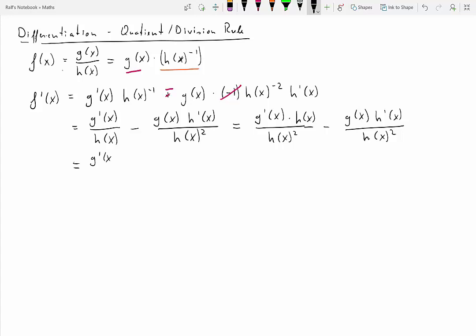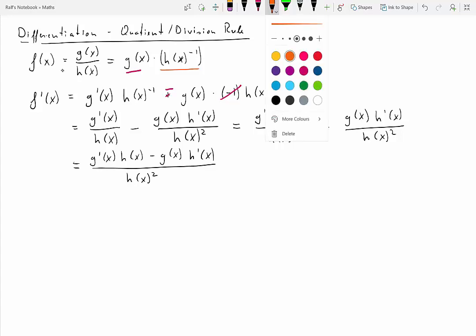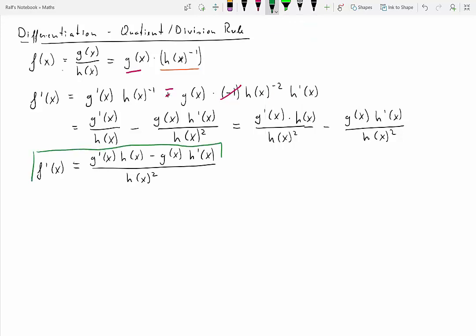So now both summands have h of x squared in the denominator. And that means we can collect the two terms. And what we get is g prime of x times h of x minus g of x times h prime of x divided by h of x squared. Now, if you don't want to every time go through the product rule to find out how to find the derivative of a quotient, that last line is what you can learn as the result of the quotient rule.